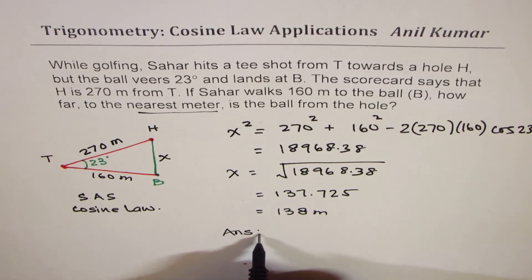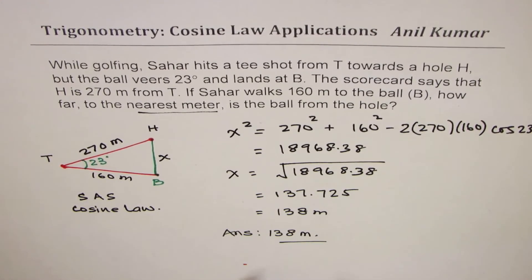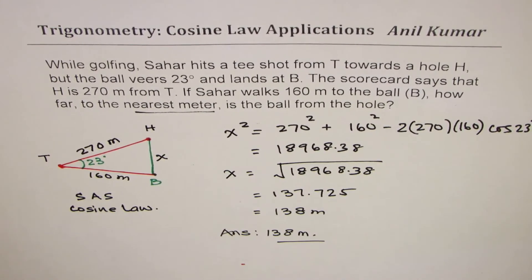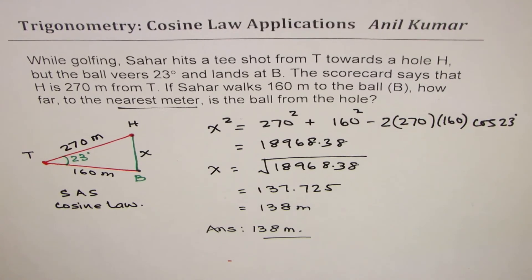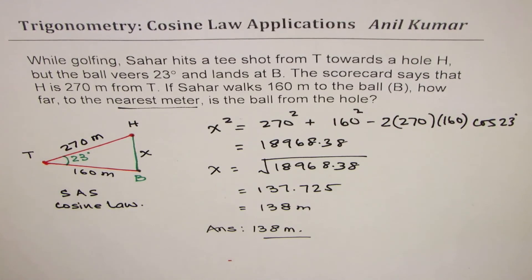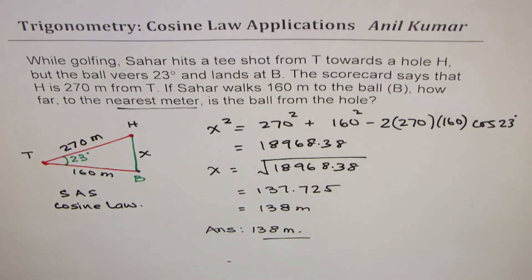The answer is 138 meters. I hope it is absolutely clear. Whenever we are given two sides and an included angle, we have to apply cosine law. Even when we are given three sides, we apply cosine law. That's a straightforward application of cosine law. Feel free to write your comments, share your views, and if you like and subscribe to my videos, that would be great. Thank you and all the best.